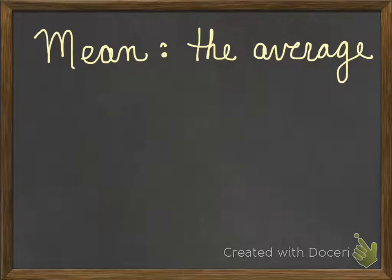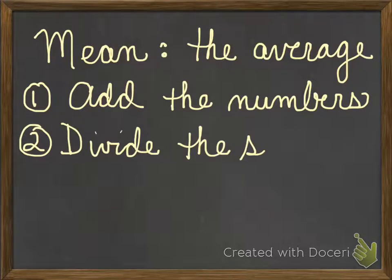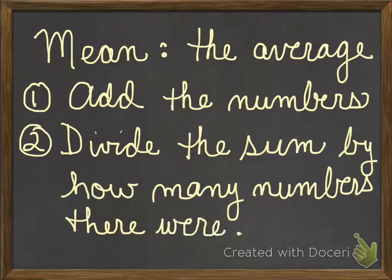Mean is the average. You may remember this from fifth grade. So mean is just the average of a set of numbers. To find the mean, the first thing we're going to do is add all the numbers together. After we add all the numbers together, we're going to divide the sum of those numbers by how many numbers there were. After we add them, we're going to divide by that number.